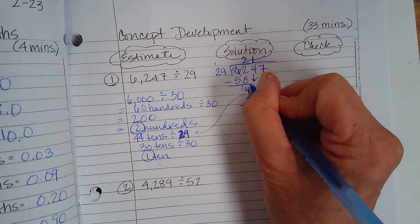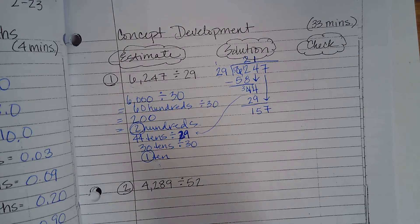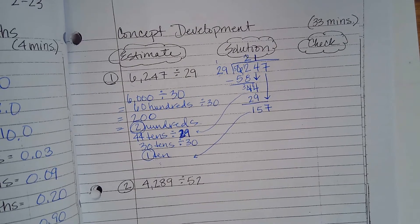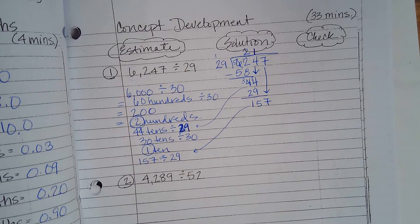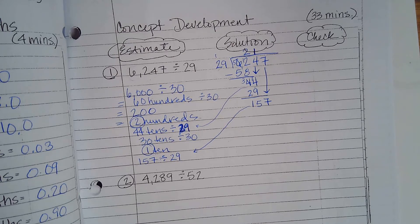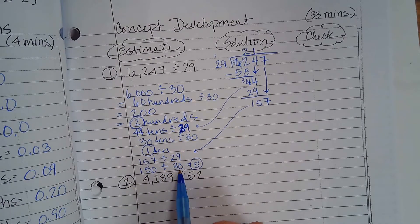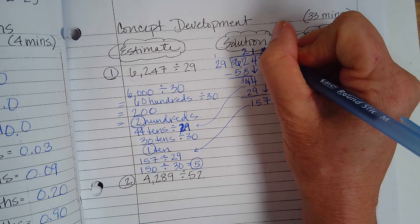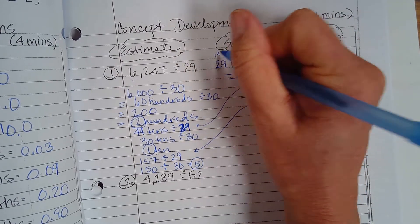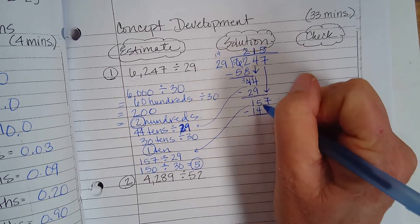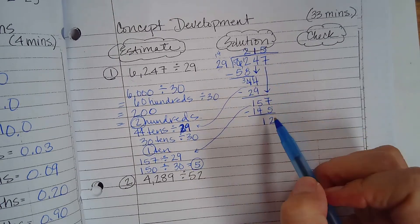Let's subtract. Now bring down the 7 to get 157. We can do the same thing: 157 divided by 29. Round to 150 divided by 30, which is 5. So 5 times 9 is 45. 5 times 2 is 10 plus 4 is 14. Subtract to get remainder 12. So we have 215 with a remainder of 12.